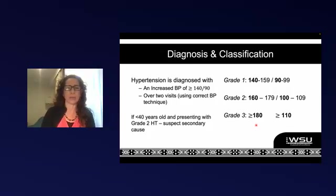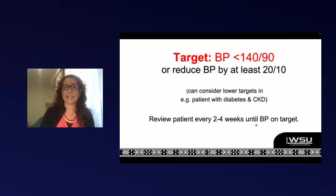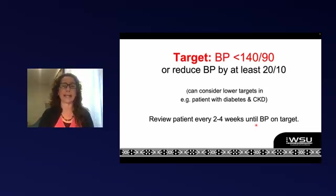These classifications are becoming more and more important in terms of deciding how heavily we're going to go in with treatment on first diagnosis. In South Africa, our target is to get blood pressure under 140/90, or at least to get the systolic down by 20 and the diastolic down by 10. We can be a little bit more cautious in patients with diabetes and cardiovascular risk factors, and especially in patients with a combination of diabetes and CKD — where you might consider setting an even lower target.